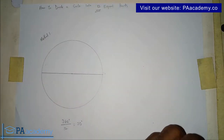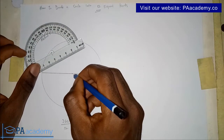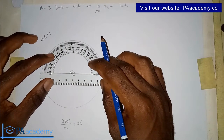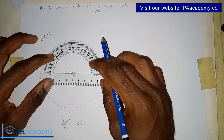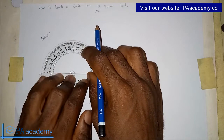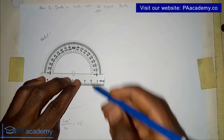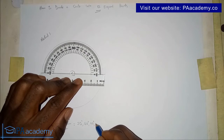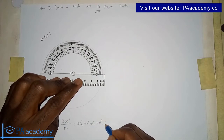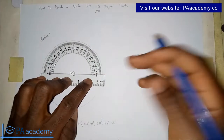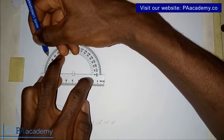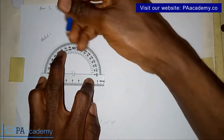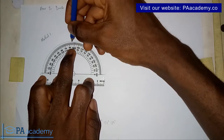Bring in your protractor and place it at the center — let's call this point O. Make sure your protractor is properly placed at the center of the circle; this is very important for an accurate result. Now start marking at 30-degree intervals. Remember, 360 divided by 12 gives us 30 degrees. So you mark at 30 degrees, 60 degrees, 90 degrees, 120 degrees, 150 degrees, and 180 degrees. At 30 degrees in the clockwise direction — here this is 0, 10, 20, 30 — then the next one is 60, followed by 90.